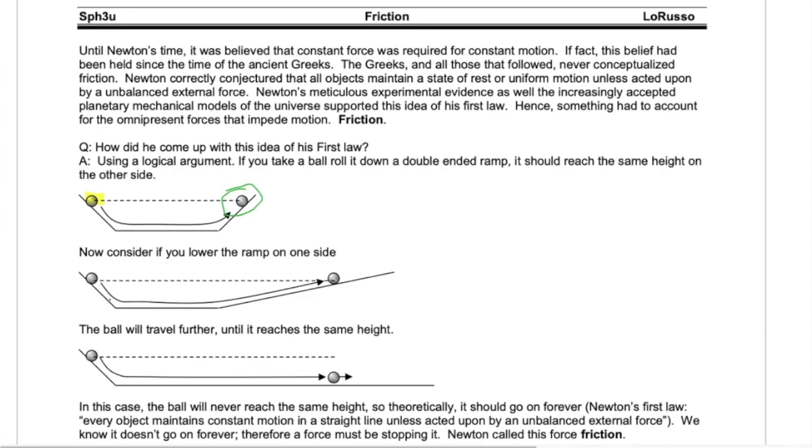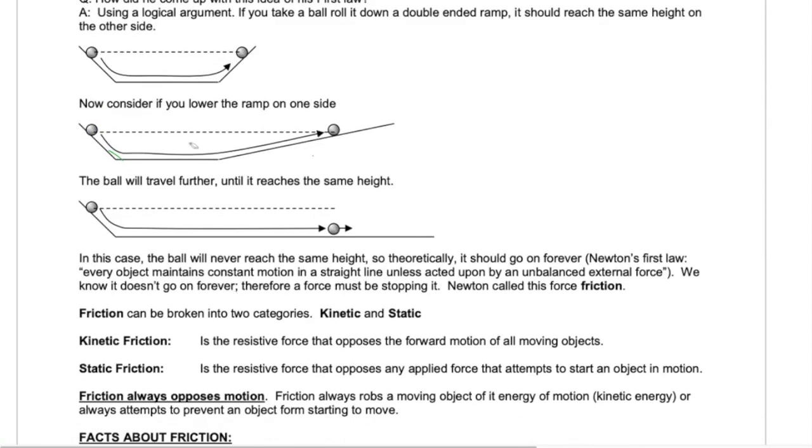And it didn't matter what the angles were for the steepness. It wasn't about how far it traveled. It was about trying to get back to the original height. Based on this, he then speculated that if the ramp traveled indefinitely, that this object would continue in a straight line forever and ever, unless acted upon by an unbalanced external force or if it could reach that same height. Of course, in reality, we don't see this happening. And that's where the idea of the force of friction comes into play.